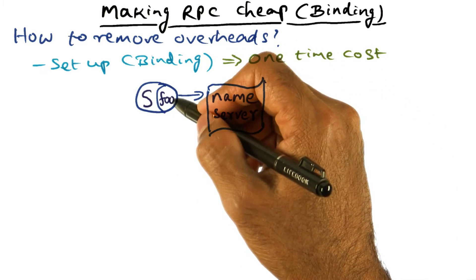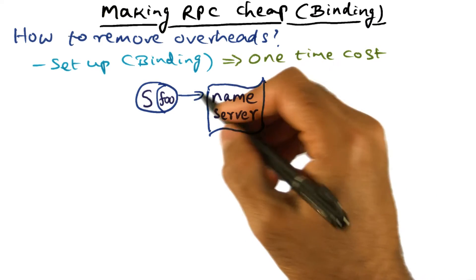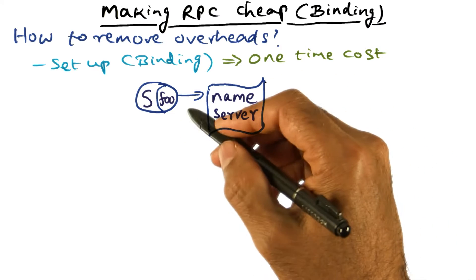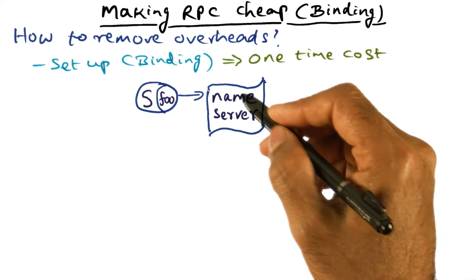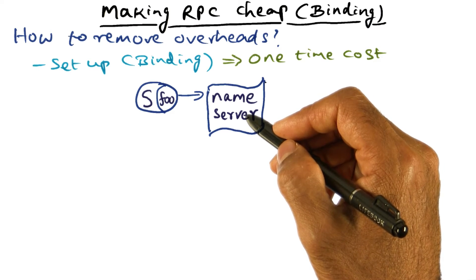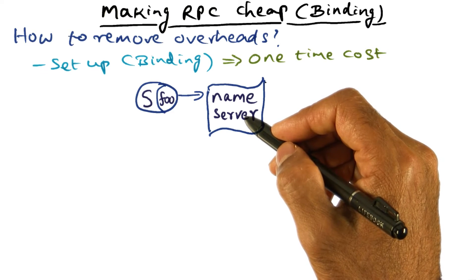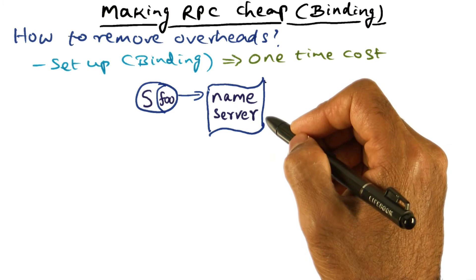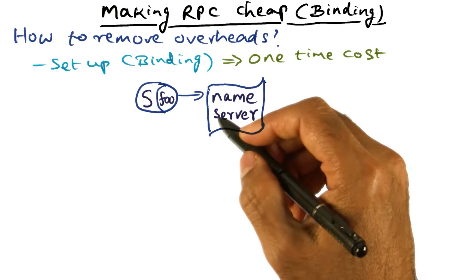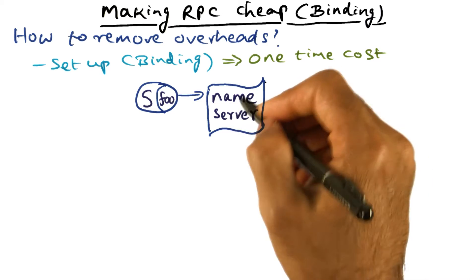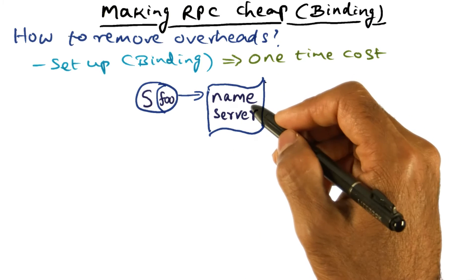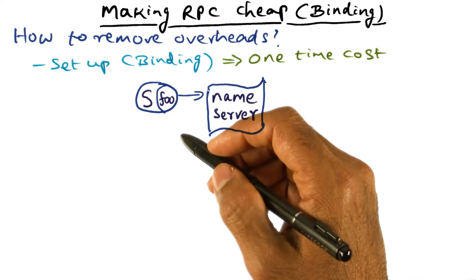The server has an entry point procedure called foo that it wants to make available for clients to call. In order to make it available for everybody, it publishes this entry point procedure in a name server and lets the kernel know that there is an entry point procedure called foo available. The name server is a vehicle by which anyone in the system can find out — it's sort of like the yellow pages. If I want to know what services are offered by a particular server, I can find out from the name server what entry point services are available from S. So foo is an entry point service that the server registers in the name server and lets the kernel know about.